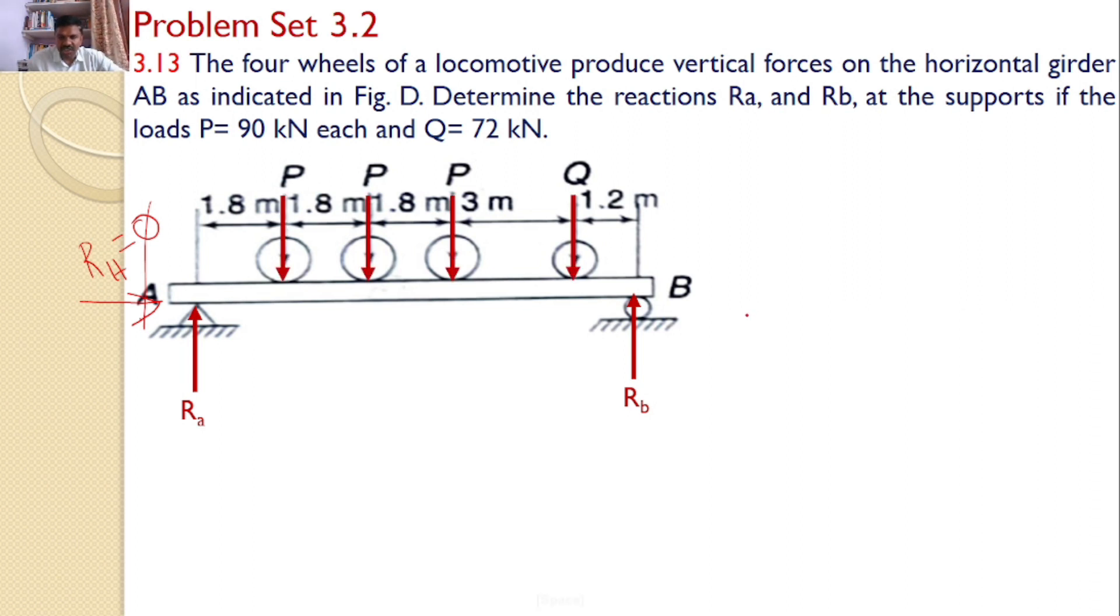By applying the equilibrium equation, sigma Fy equals 0. Two forces acting in the upward direction, Ra plus Rb, and there are four forces acting in the downward direction: three Ps and one Q. Hence, Ra plus Rb equals 3P plus Q. P value is given as 90 kN, Q value is given as 72 kN, so I can substitute and get Ra plus Rb equals 342, equation number 1.